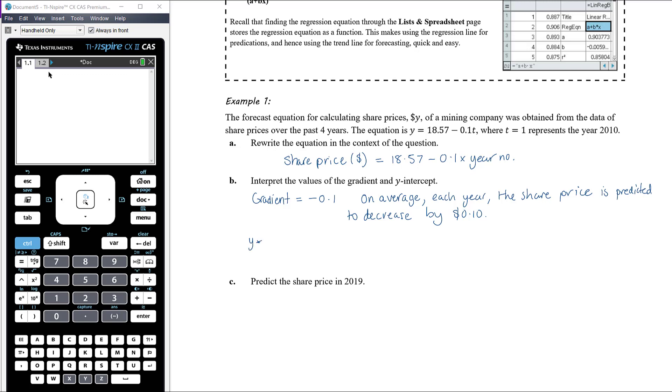And the y-intercept. So the y-intercept is 18.57. So remember, that's the value of the y-variable, the share price, when the x-variable, the year, is 0. So this means that, now, given that year 1 is 2010, year 0 must be 2009. The share price in the year 2009, which is t equals 0, was approximately $18.57.